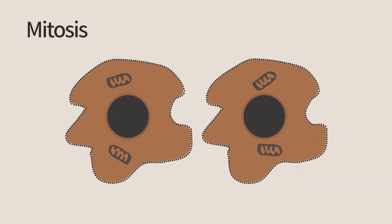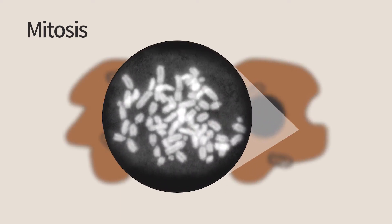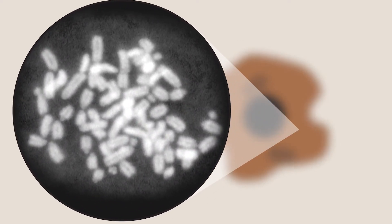The cell contains a large variety of molecules and organelles that are all segregated to its daughters. The genome encoded by the chromosomes is replicated and segregated with very high fidelity.